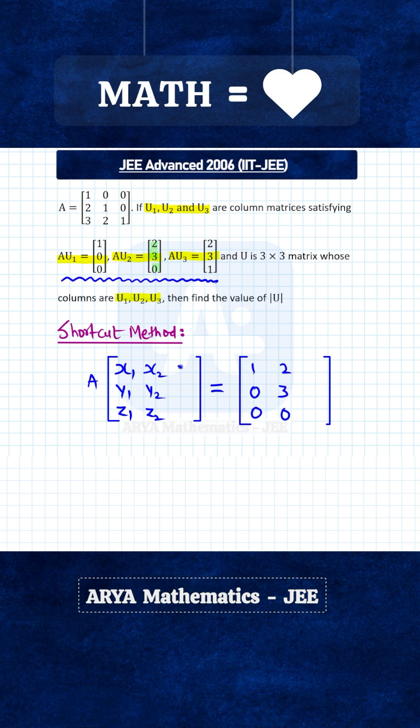Similarly, if u3 is another column matrix and its elements are x3, y3, and z3, then we can write A into this third column. This is basically corresponding to this third equation A into u3 equals to 2, 3, 1, so here we'll write 2, 3, 1.